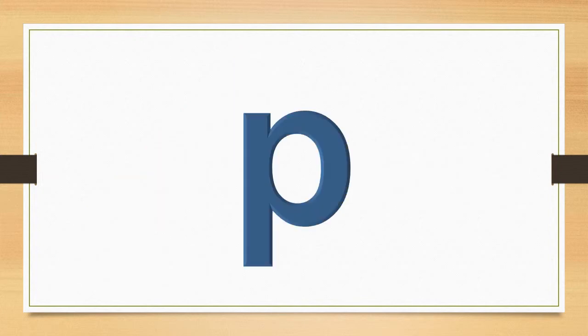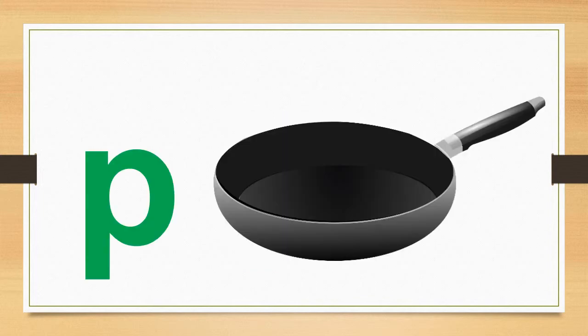This is the lowercase letter P. The letter P says P. P says P. The word pan starts with the sound P. P, pan, P.